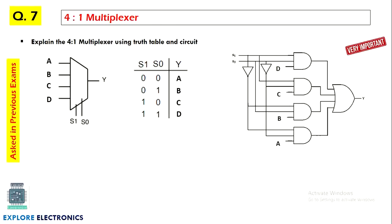Multiplexer — a 4-to-1 multiplexer — is again a very important question. Inputs A, B, C, D are given and two select lines are required. This can be implemented by writing the expression for output Y. The implementation is done according to how the expression is written; I have explained this in the video, you can watch that.